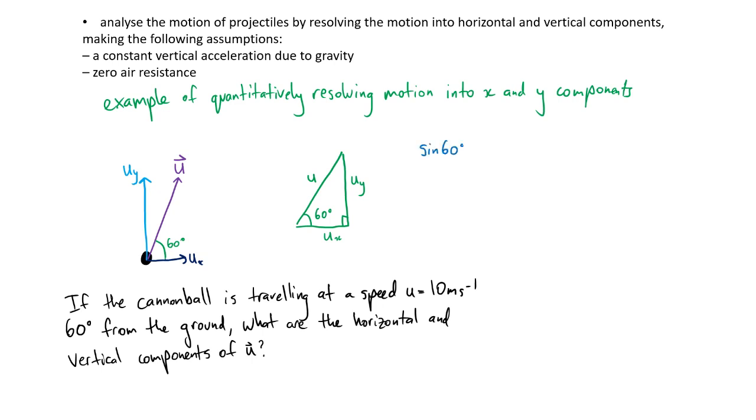Sine 60 degrees is going to equal to the opposite, Uy divided by U, which gives us Uy being equal to U sine 60. It's going to equal to 8.66 meters per second because this is equal to 10 and this is equal to root 3 divided by 2. We know that cos 60 degrees is equal to Ux divided by U. Therefore Ux equals U cos 60 degrees, which is equal to 5 meters per second.